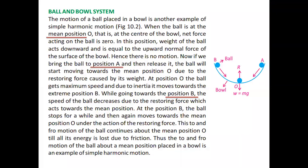First of all we have the ball and bowl system. The question is: explain simple harmonic motion of the ball and bowl system. This is the ball and bowl system and it is an example of simple harmonic motion. In this arrangement we have a bowl, and there is a ball inside it.